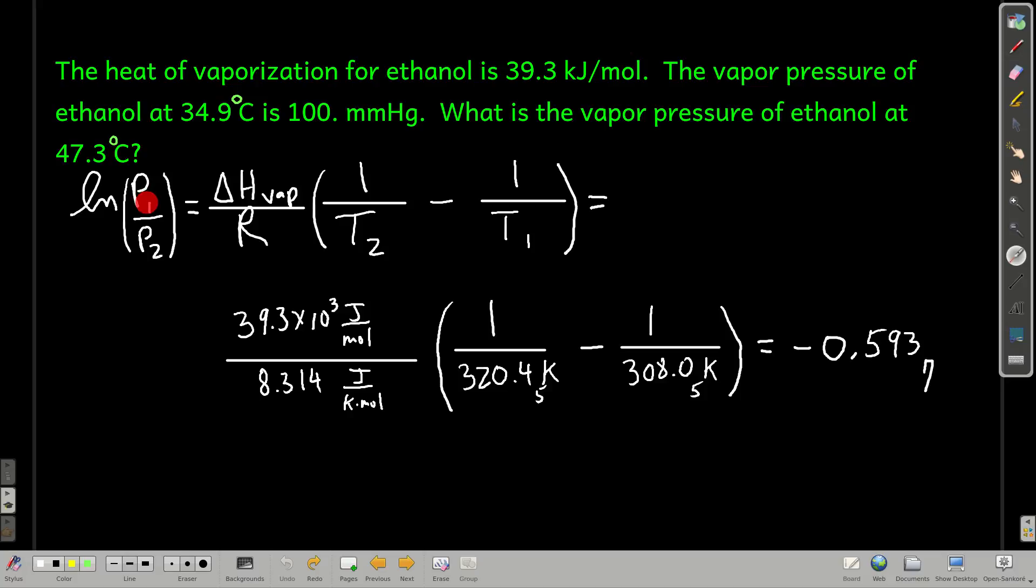P1 is 100 millimeters of mercury, and T1 is 34.9 Celsius. So what we're going to do is plug into the Clausius-Clapeyron equation. What I did here is plug into the right-hand side. Notice that because R is 8.314 joules per kelvin mole, the heat of vaporization has to be in joules per mole, and you're almost always given it in kilojoules. So watch out for that. All I did was replace the kilo with times 10 to the third.